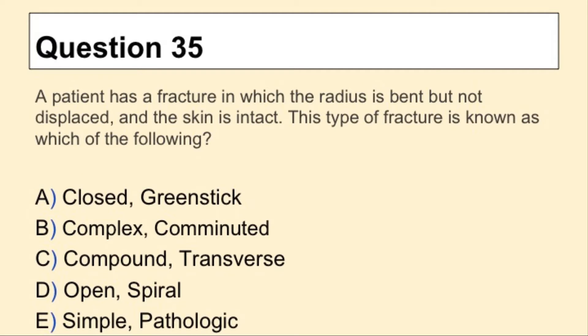Question 35. A patient has a fracture in which the radius is bent but not displaced and the skin is intact. This type of fracture is known as which of the following?